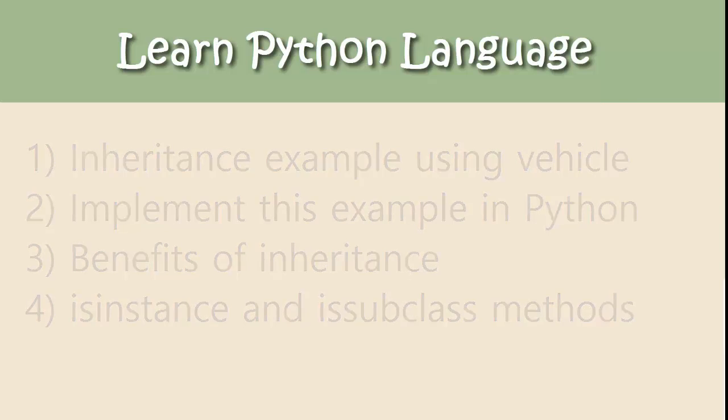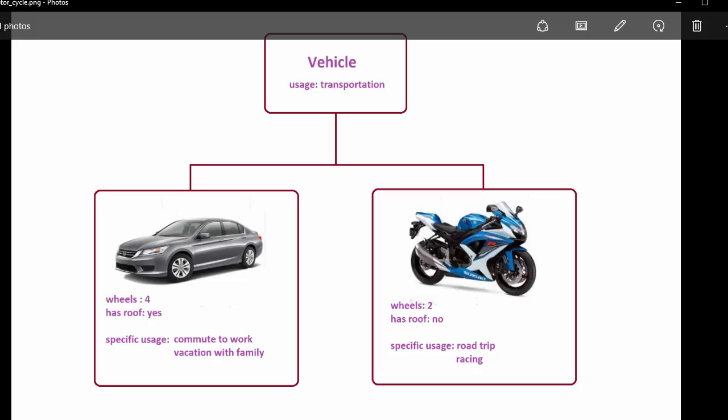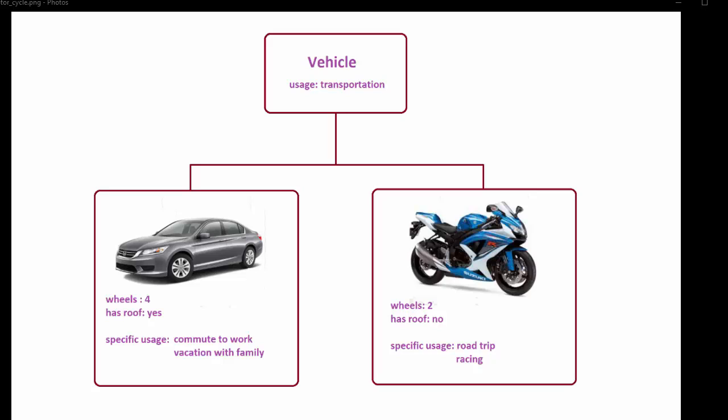Let's understand inheritance by taking the example of vehicle. When you think about vehicles, you have so many vehicles available such as cars, trucks, motorcycles, etc. They all provide the same purpose which is transportation. When you go to a specific type of vehicle such as car and motorcycle, they have their own purposes and characteristics. For example, a car has four wheels and a roof, whereas a motorcycle has only two wheels and no roof.